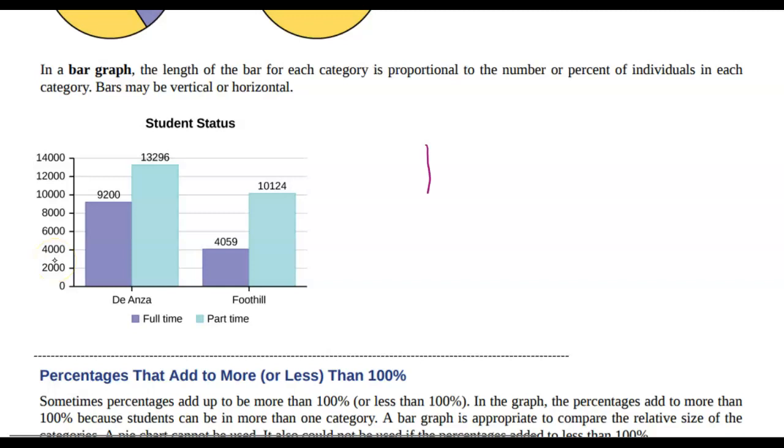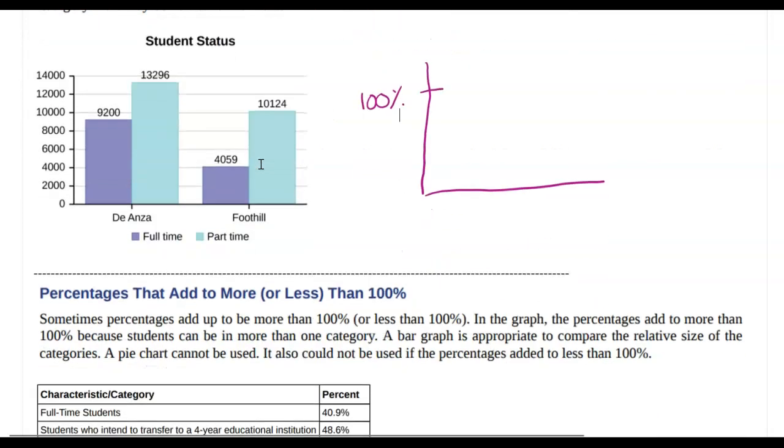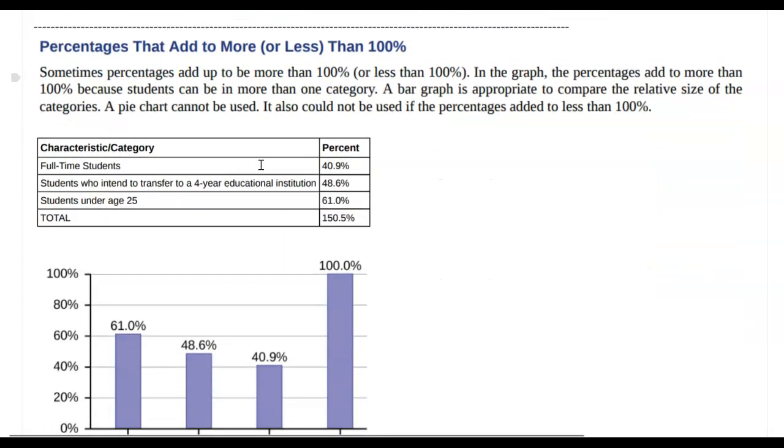Or you could do the relative frequencies here instead. So if you wanted to add a hundred percent and then create bar graphs there, then you might be able to compare the proportions a little bit better if that's what you're wanting to look at. All right, let's look at this.